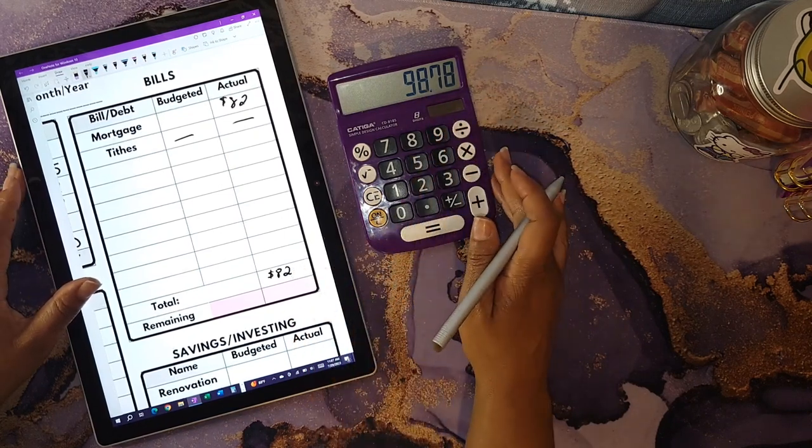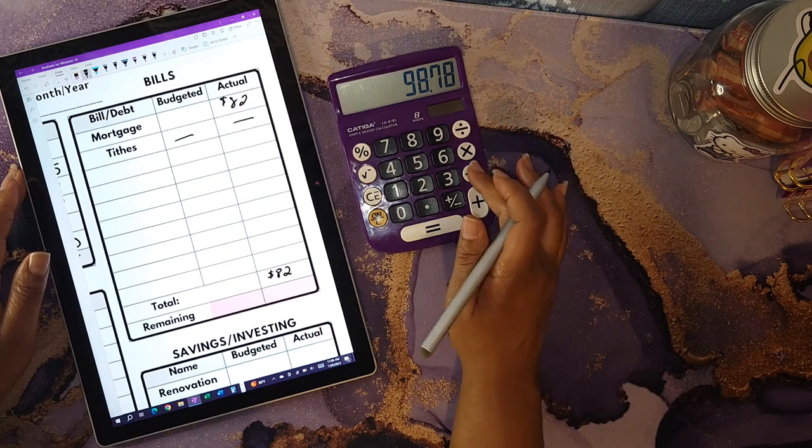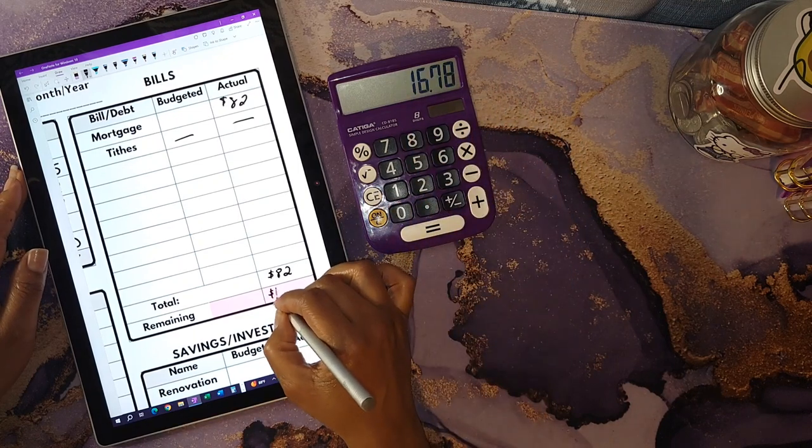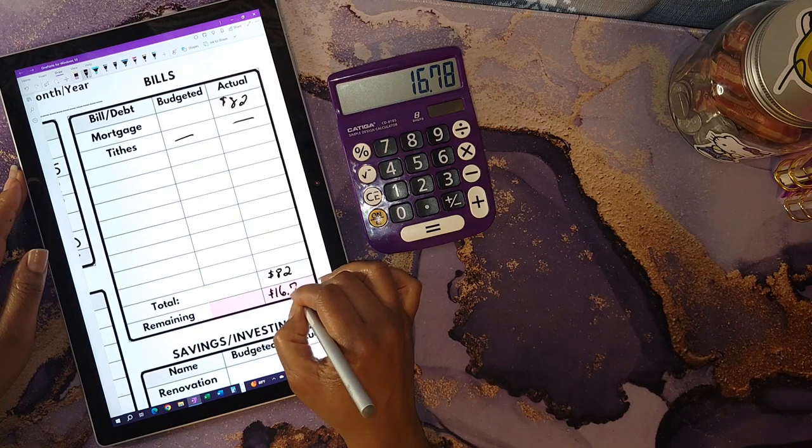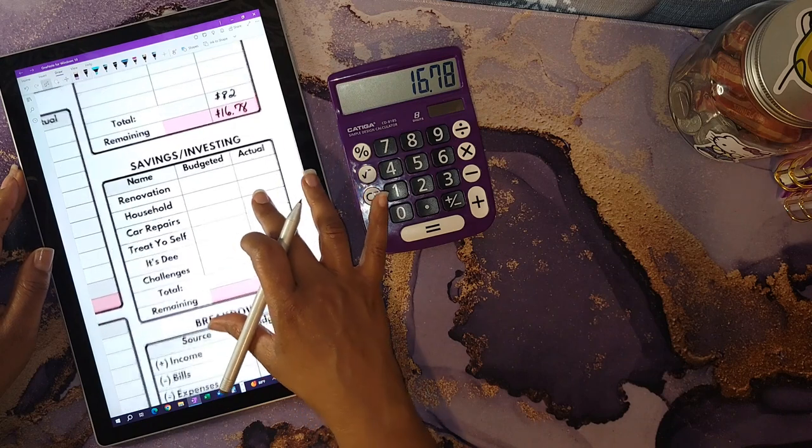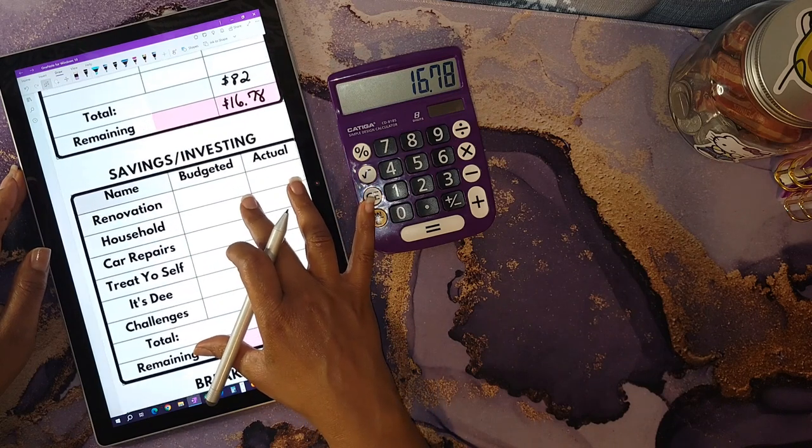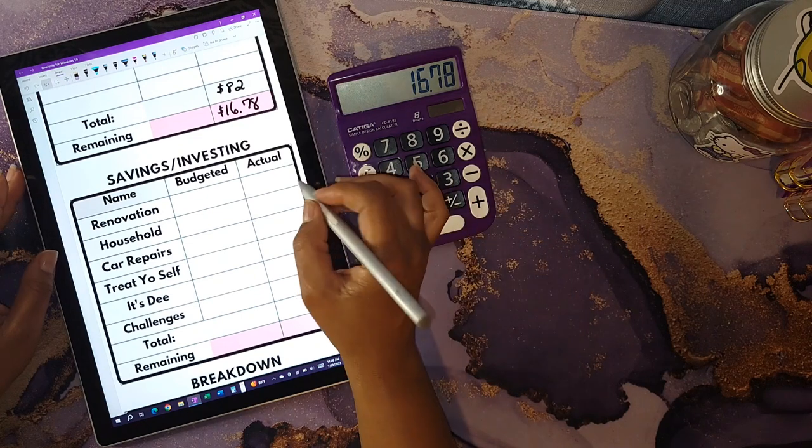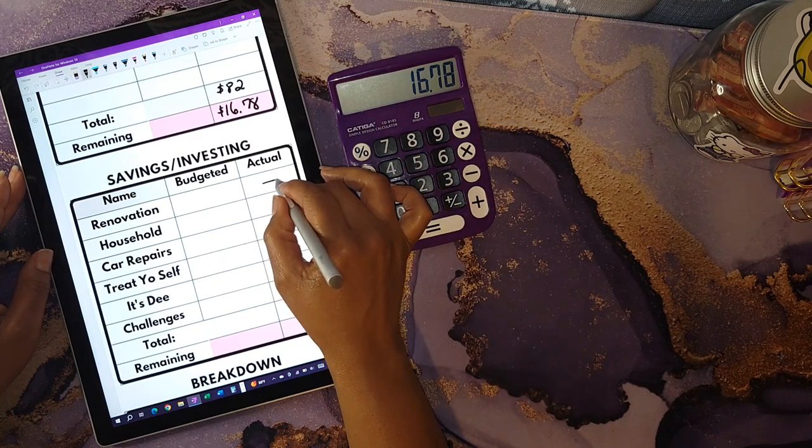I'm going to take the $82 and subtract it from what I earned, which was $98.78 minus $82. Now I have a remaining of $16.78 to allocate. The next section I will be going over is the savings and investing section. I did not do anything towards renovation, household, or car repairs.